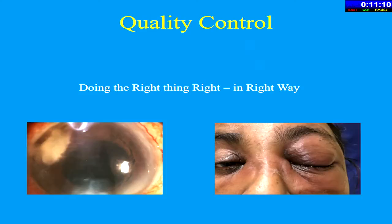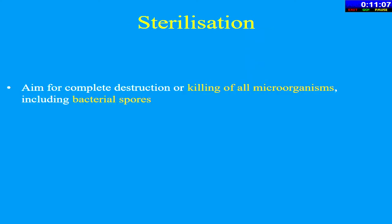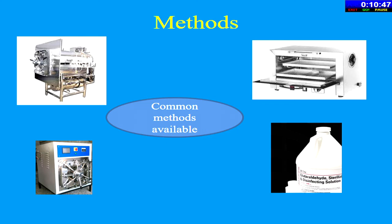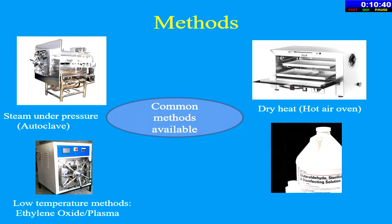The most common methods used are autoclaves, hot air or dry heat, ETO or low-temperature methods which include ETO sterilizers or plasma sterilizers, and chemical sterilants like glutaraldehyde. Autoclave is used for heat-resistant instruments like metal instruments. After proper cleaning, instruments are dried and packed — within the instrument, Class 5 indicators are placed to show whether the process has taken place completely; an outside indicator is also placed on the tray. Steam under pressure in the autoclave kills the microbes and is the best method among all available techniques.